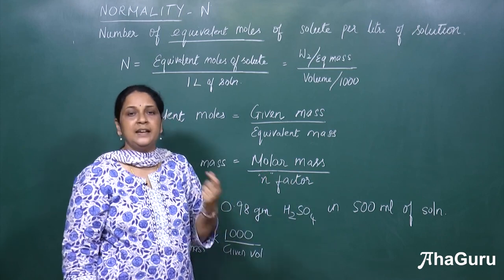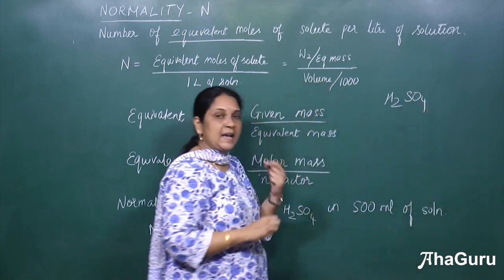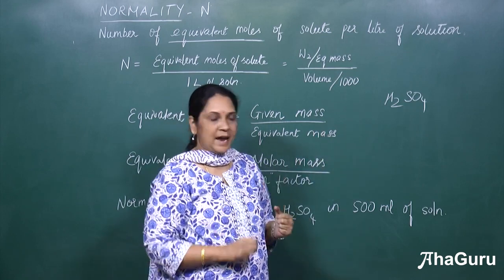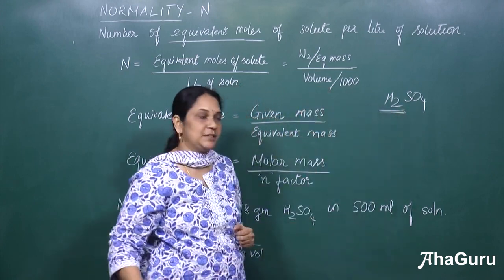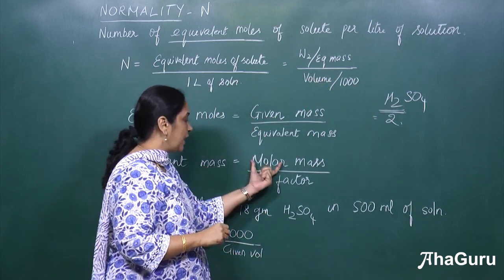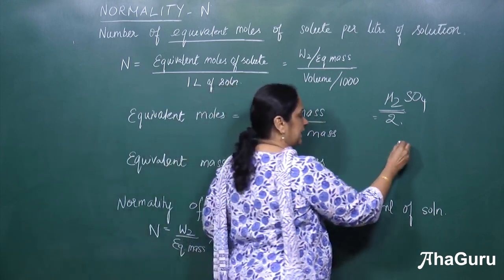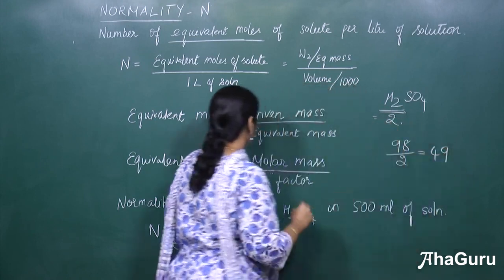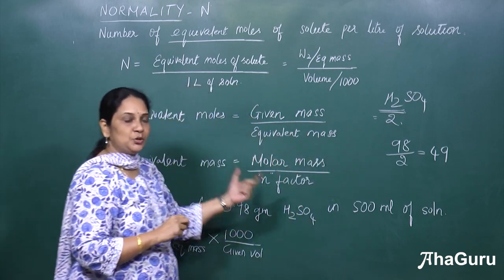Now let us calculate the N factor using sulfuric acid, H₂SO₄, as an example. For an acid, the N factor is the number of replaceable hydrogen atoms. In sulfuric acid, the number of replaceable hydrogen atoms is 2. So the equivalent mass is molar mass divided by N factor: 98 divided by 2, which equals 49. So the equivalent mass of sulfuric acid is 49.